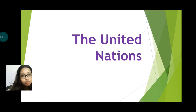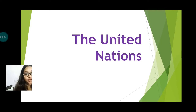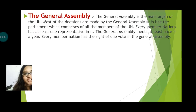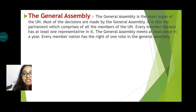We already discussed about the UN — what is the UN and how it was formed. Now today we are going to discuss about its organs. The United Nations has six main organs. They are the General Assembly, the Security Council, the Secretariat, the Economic and Social Council, the International Court of Justice, and the Trusteeship Council.